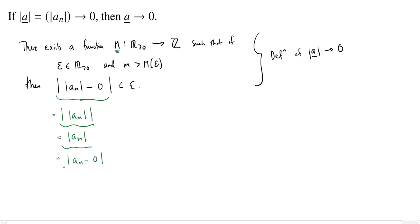And that's exactly what we have here. All these are equal to each other. So actually, even though we said this was the definition of the absolute value of a going to zero, it's also the definition of a going to zero. How nice is that?